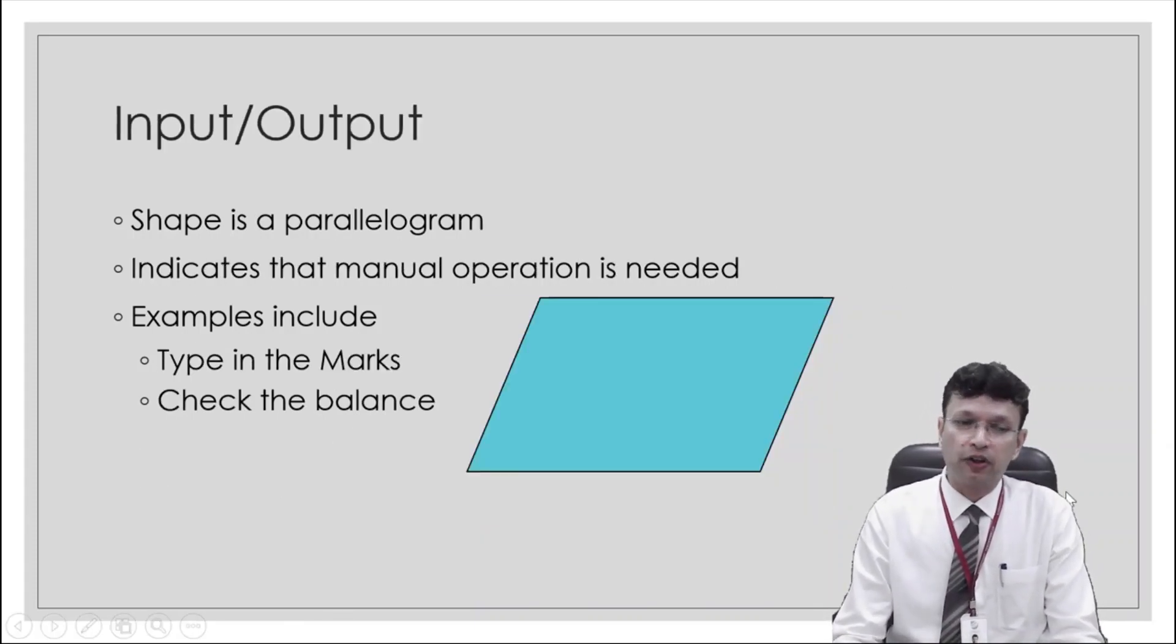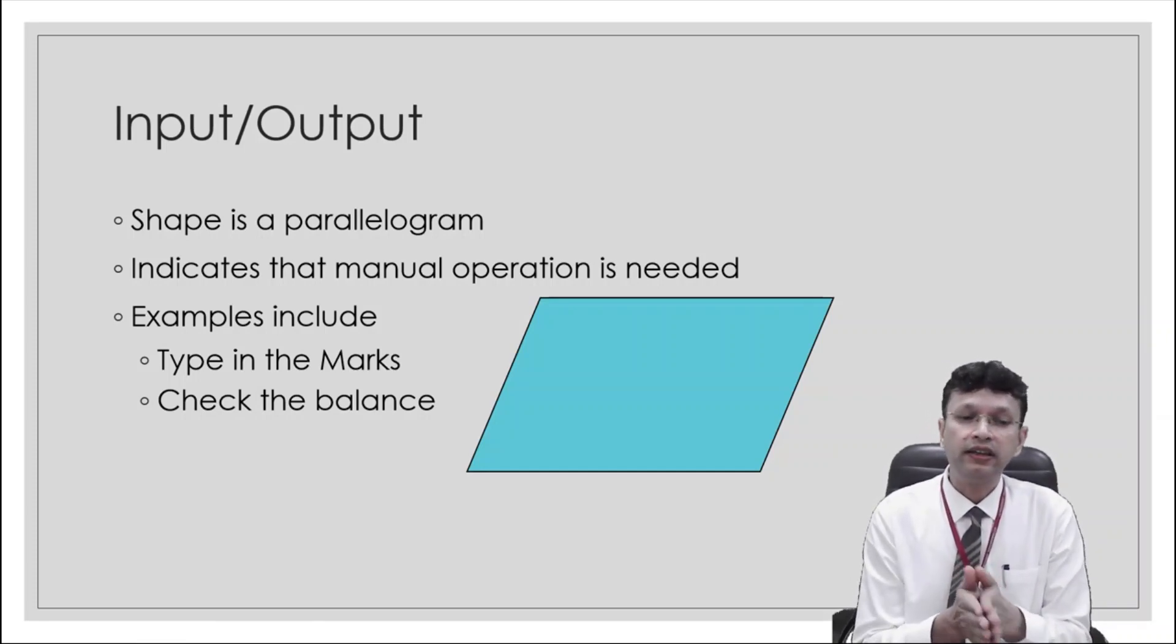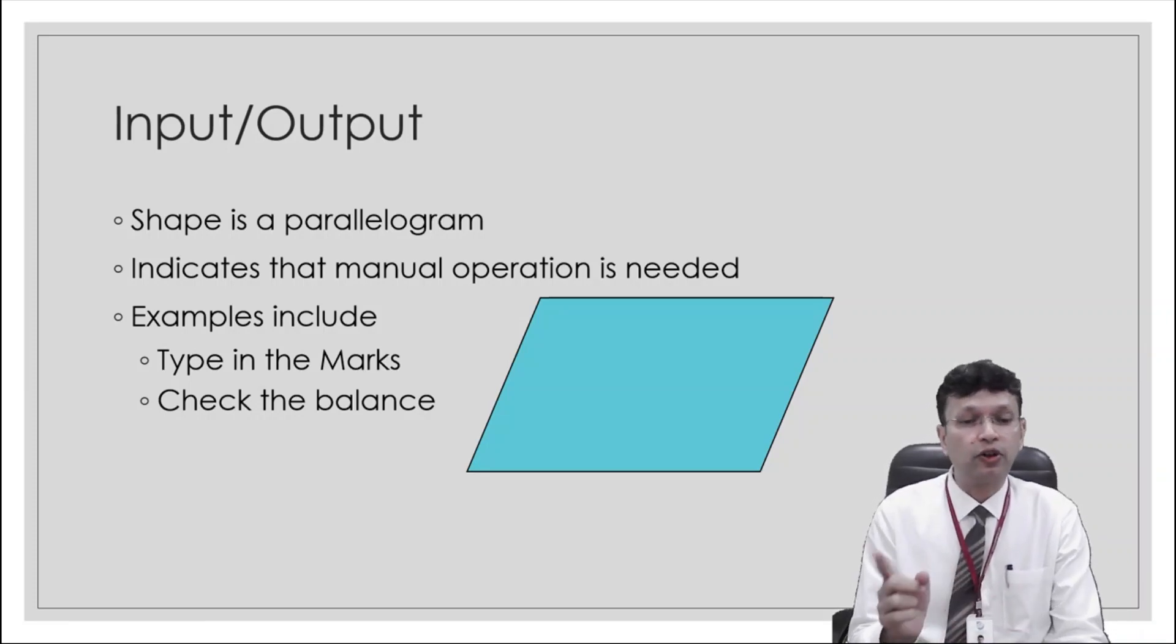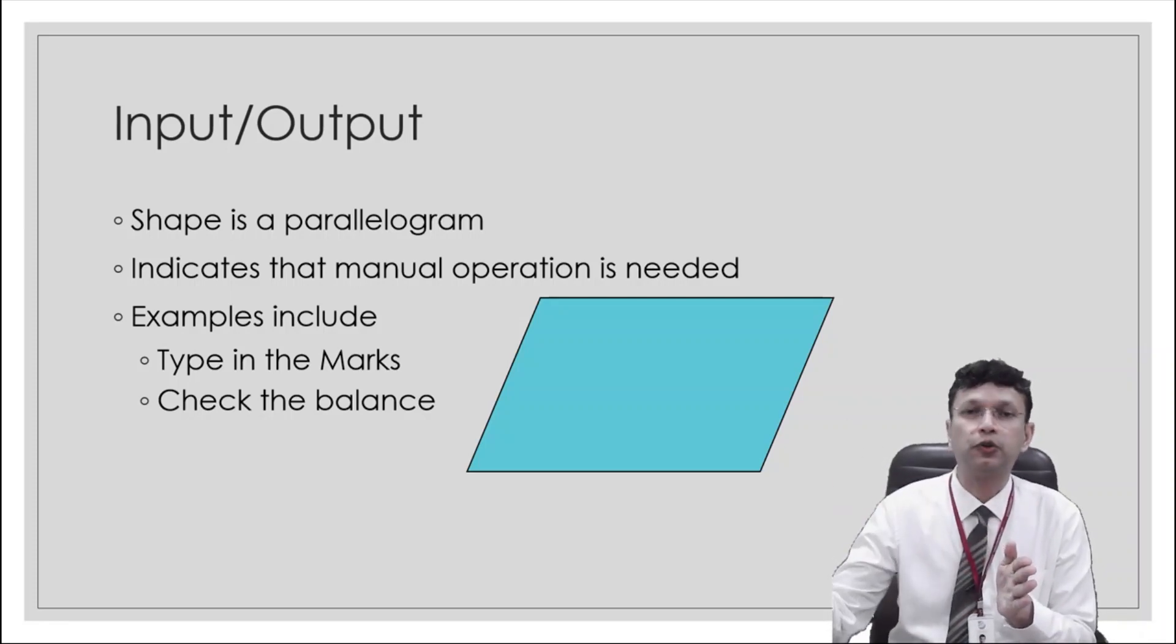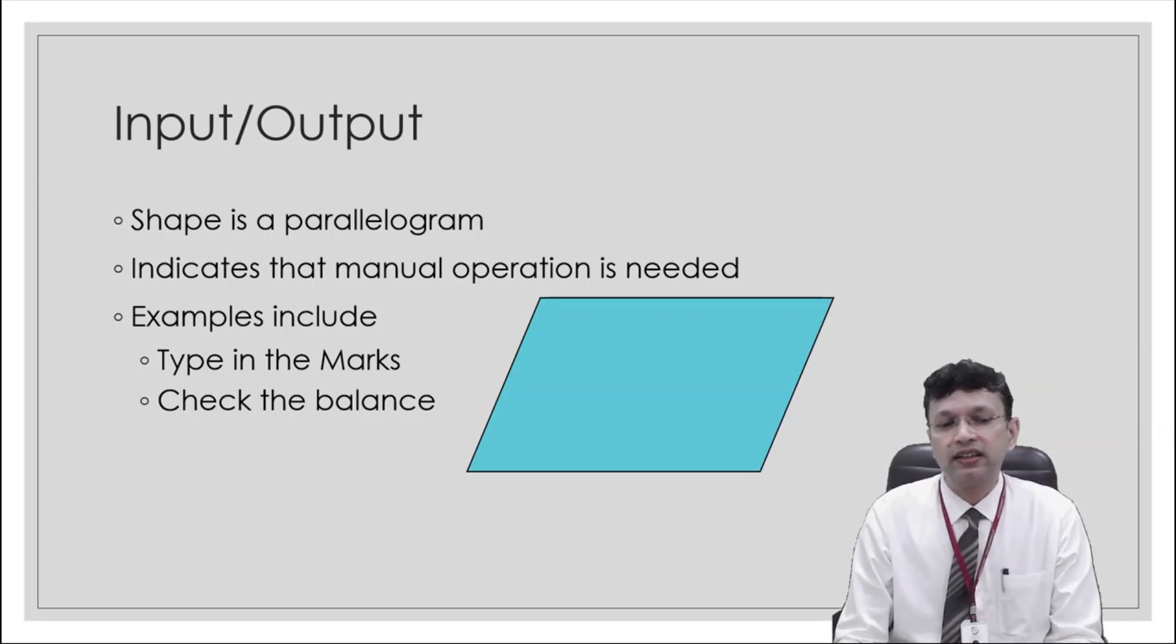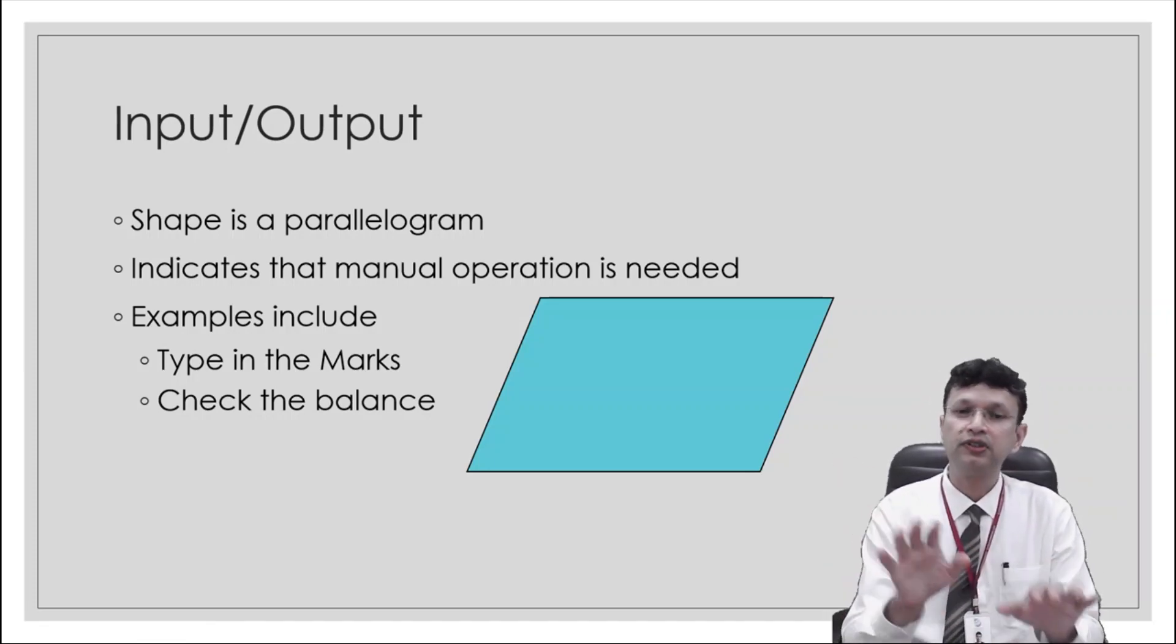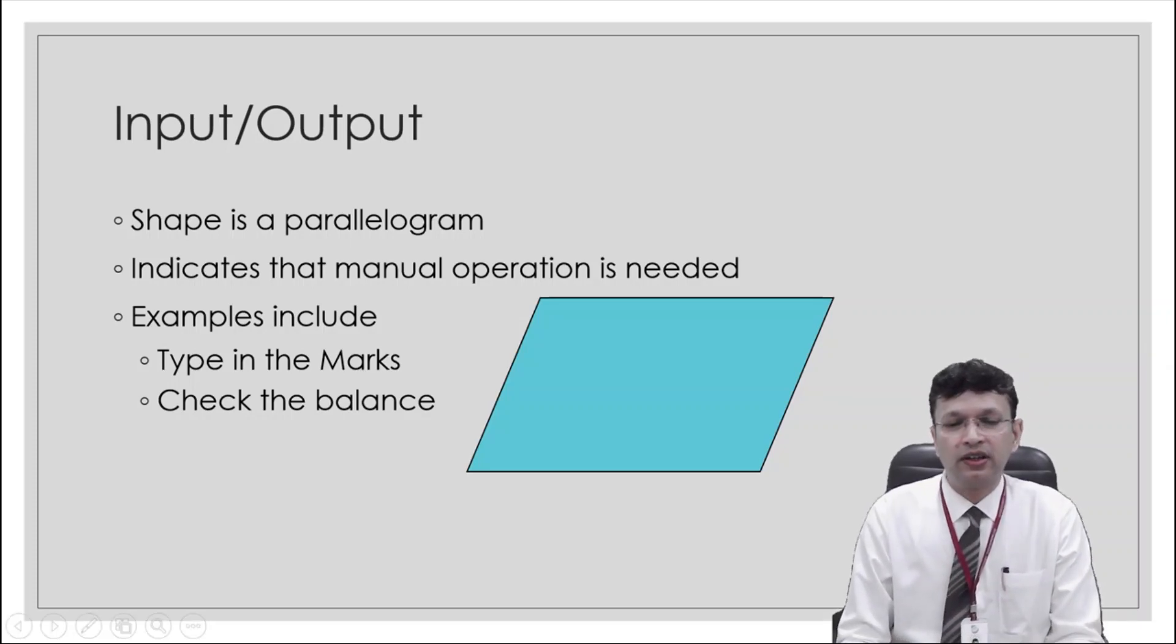Then we have input and output devices. And input output devices will be managed by the parallelogram. Now this indicates manual operation because the transfer will be from process to the input or the output. So like type in marks, check in the balance. So these will require the person to have some kind of input or output.